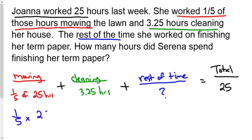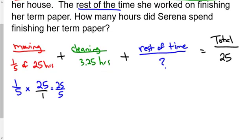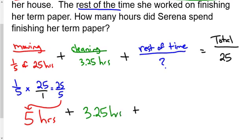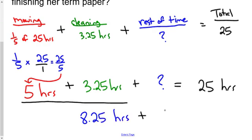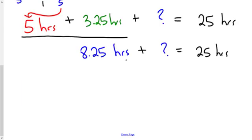How do these three numbers fit together to equal total number of hours worked? Well, we need to add them together. We need to figure out what this number is. We also need to figure out what this number is. So let's go ahead and do that at this time. One-fifth times 25 - well, 25 over 5 is the same as 5 hours. So 5 hours plus 3.25 hours plus an unknown number of hours on this term paper equals 25 hours. Obviously you know we should add these two together so we can figure out what needs to be added on to the 8.25 hours to get 25.